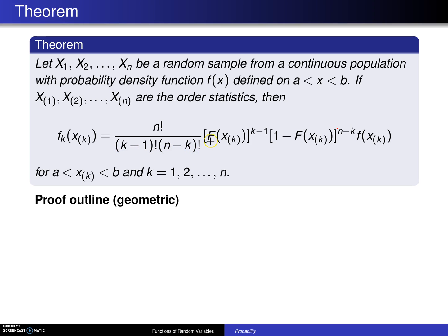The formula continues: CDF capital F of x evaluated at xk to the k minus 1 power, 1 minus the population CDF evaluated at xk to the n minus k power, times the probability density function of the population evaluated at xk for all xk values between a and b and k equals 1 through n.